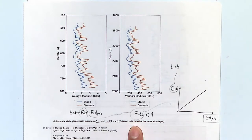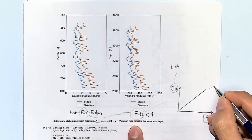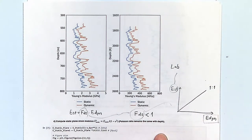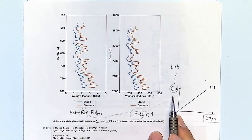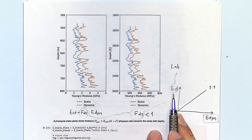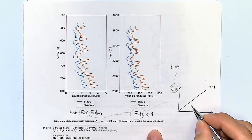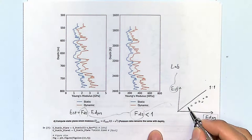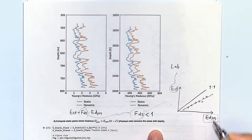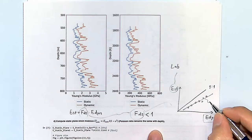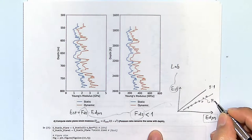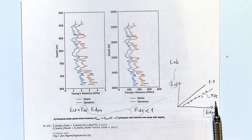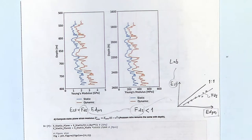If the static and dynamic moduli were the same, all data points would fall on a one-to-one line. But as I told you, the static moduli are always smaller. So you get a scatter for a given rock, you fit a line, and from that correlation you get your conversion factor.